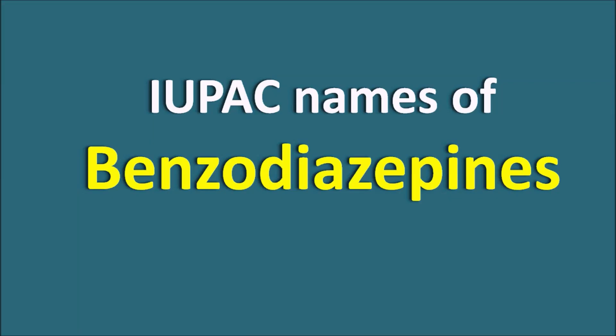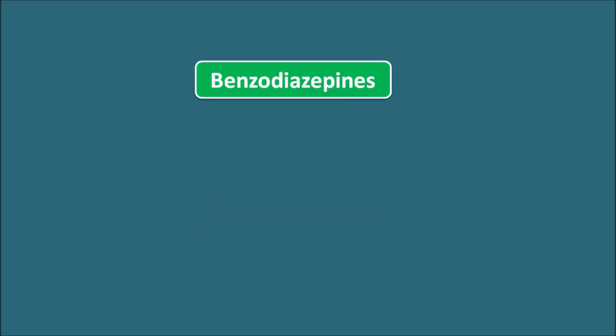Hi everyone. Today we will discuss the IUPAC names of benzodiazepines — how we can give the name for benzodiazepines. When we look at the IUPAC names of benzodiazepines, in some structures we can observe the point of saturation indicated by 3H (the indicated hydrogen), and in others we observe 2H as the indicated hydrogen. There is a lot of variability in the naming of benzodiazepines, and in this video we will see where to use 3H and where to use 2H.